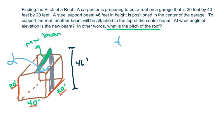So, we know tan of alpha equals 46 minus 20 over 10.